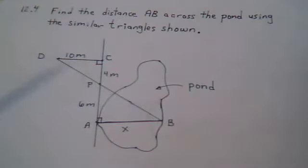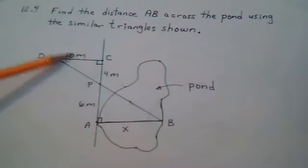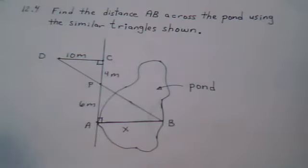It also implies that the size of the matching sides of the triangles should be proportional. So, for example, 10 meters and X would be matching the sides. These two sides should be proportional.